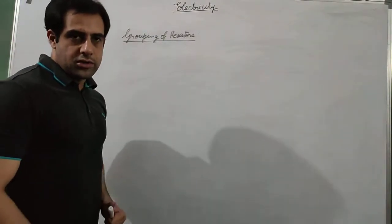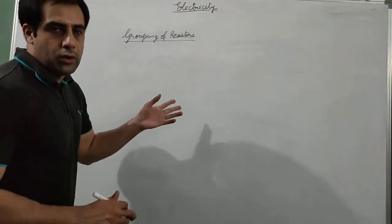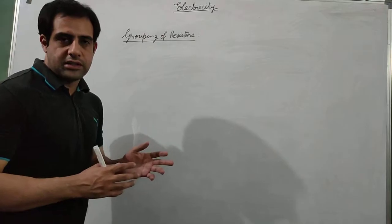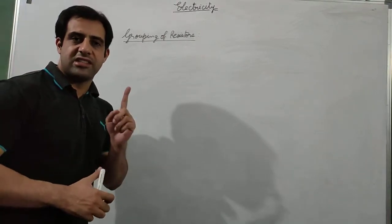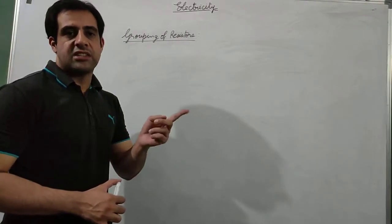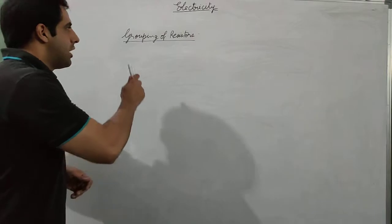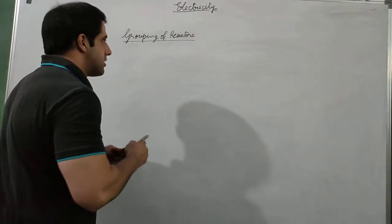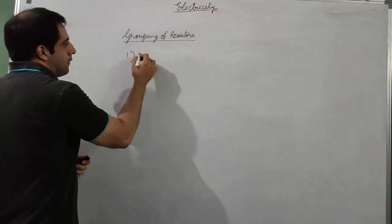In this video we are going to study grouping of registers in detail. In the earlier video I told you that grouping of registers means more than one resistance can be grouped together and replaced by one single register which has the same value as that of the combination of registers. So there must be some method to combine the registers, and we have two methods.